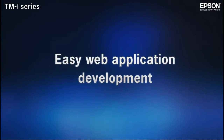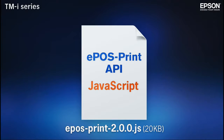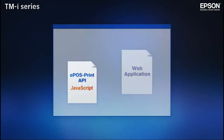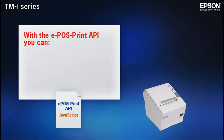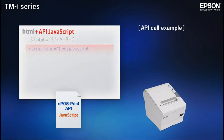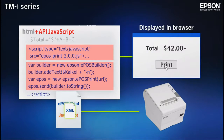With Epson technology, web application development is amazingly easy. Our JavaScript ePOS print API makes it possible to check printer status and control a wide range of print parameters. Simply follow the instructions in the manual to invoke the JavaScript and enable your application to send XML data.